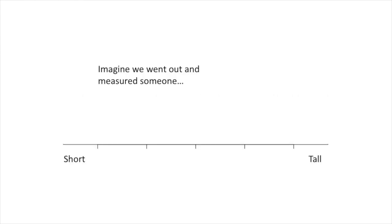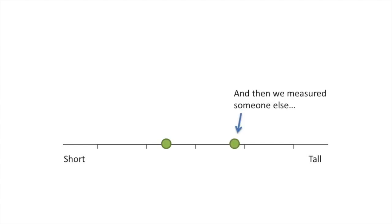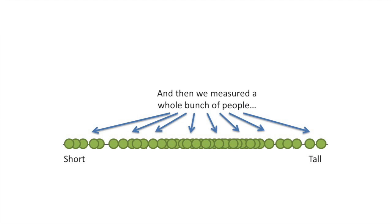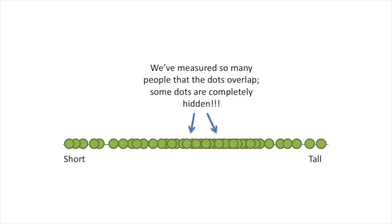Imagine we went out and measured someone, and they were this tall. And then we measured someone else. And then we measured a whole bunch of people. We've measured so many people that the dots overlap. Some dots are completely hidden.